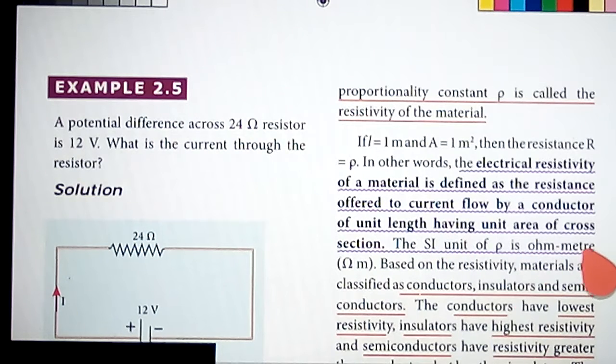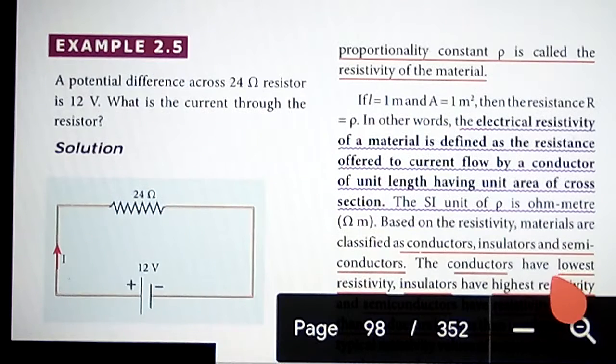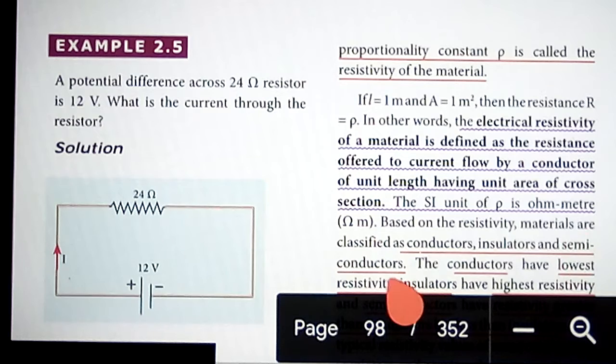The SI unit of rho is ohm meter. Based on the resistivity, the materials are classified into conductors, insulators, and semiconductors.